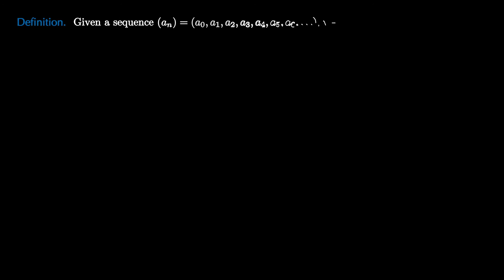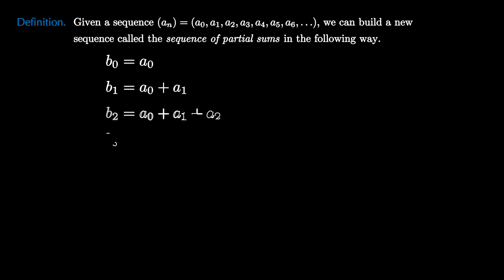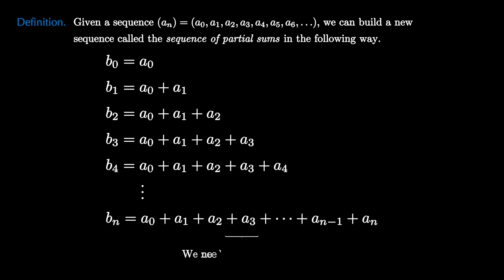But this suggests a general definition. Given a sequence or a list of numbers, we can build a new sequence called the sequence of partial sums in the following way. We keep a running sum so that bₙ is the sum of the terms from a₀ all the way up to aₙ. This notation is a little tedious, so we need to introduce some new notation for this.